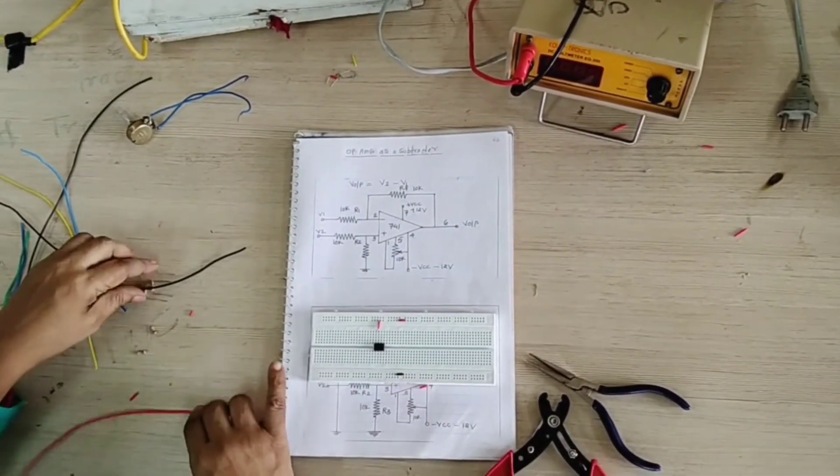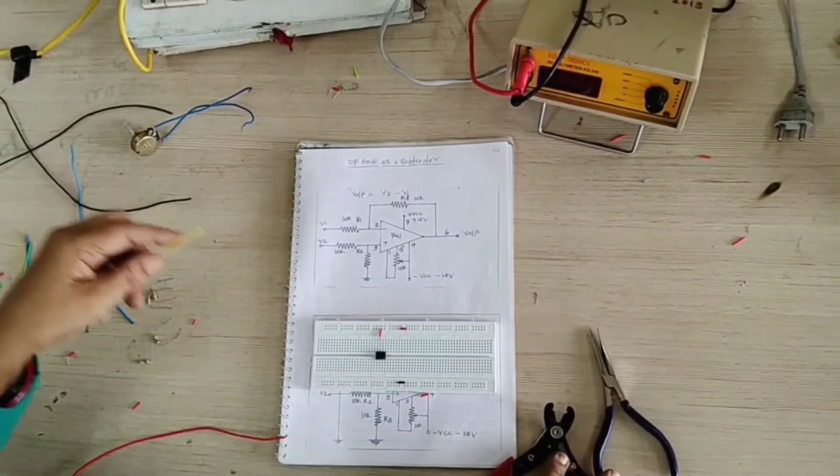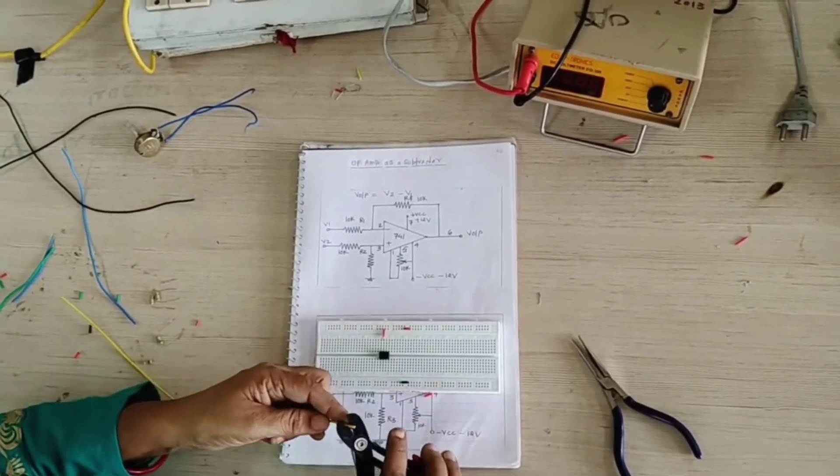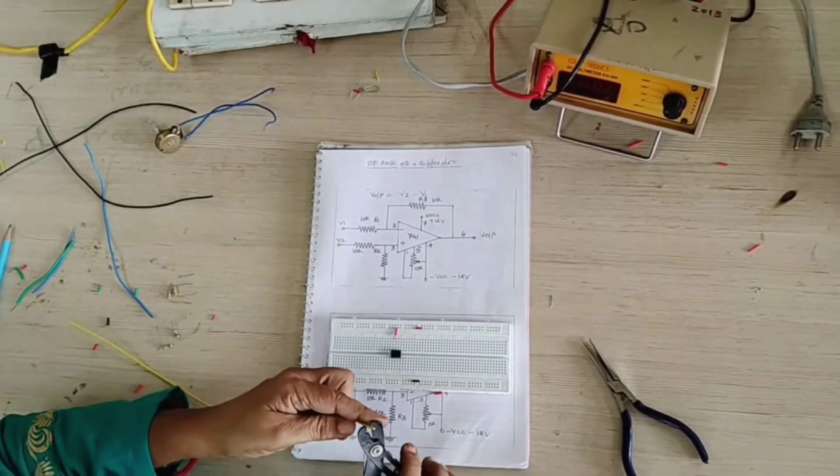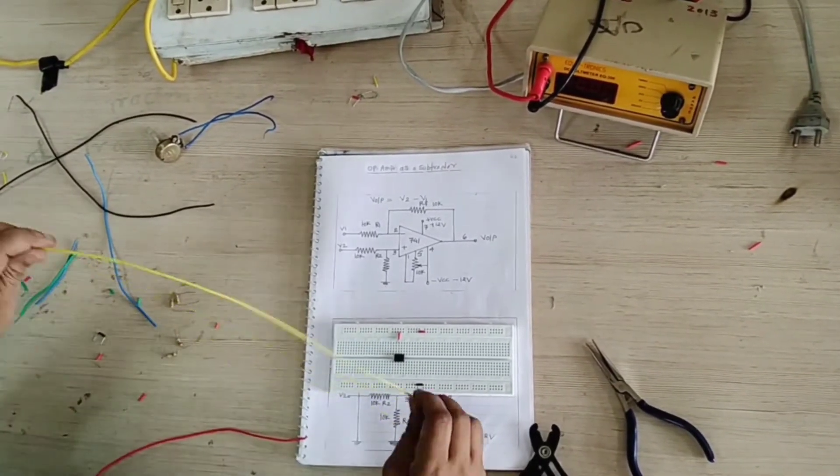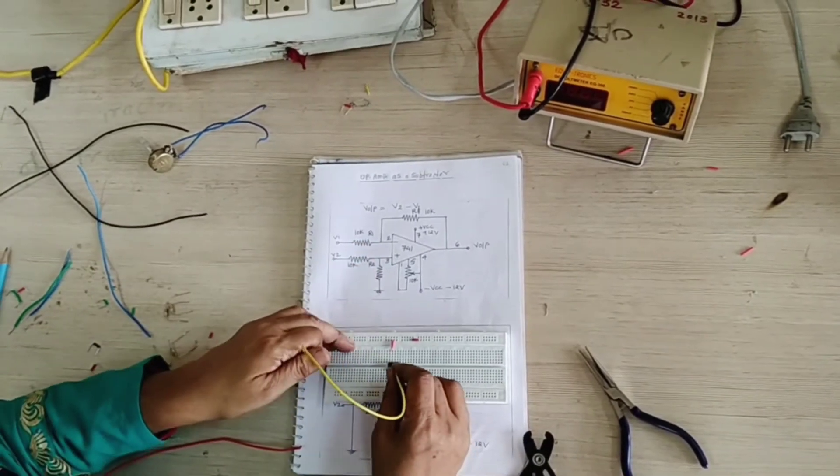And see here, we indicated next color of the wire. It is indicated pin number 2. Pin number 2 is the first fit by R1. See here, pin number 2.